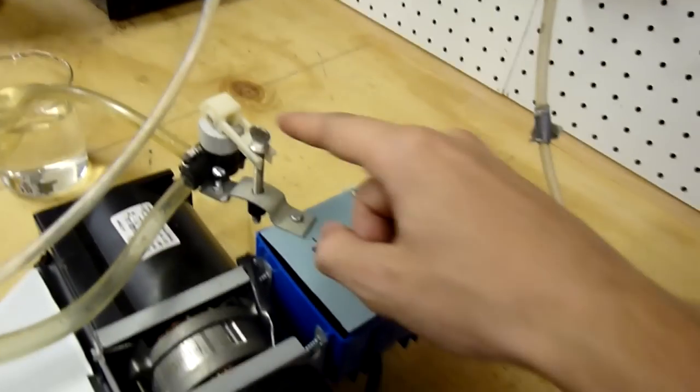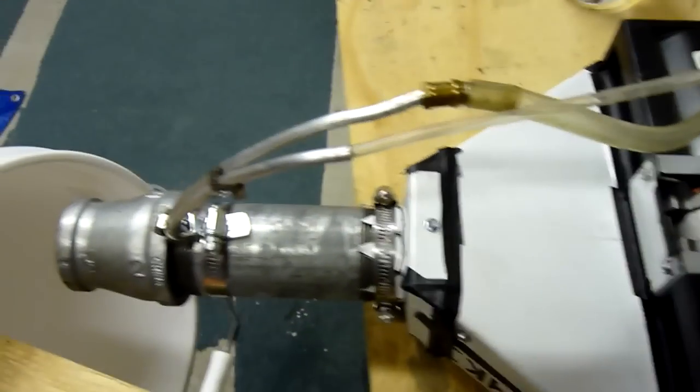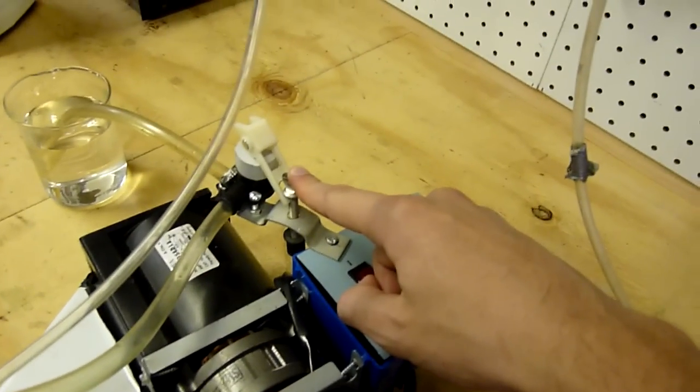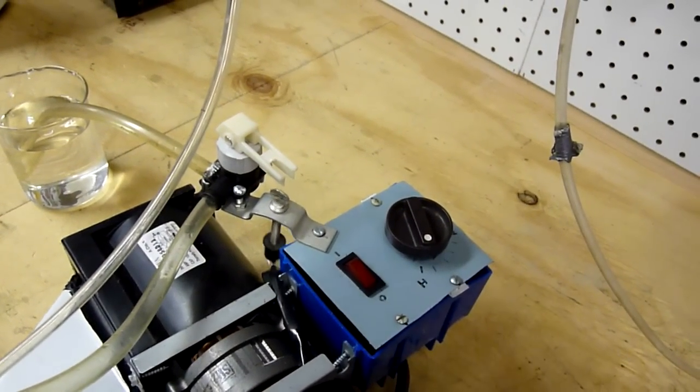But also, this allows me to push down on this all the way to prime the fuel line with the vacuum generated by the aspirator over here. And I can do this as an emergency shutoff.